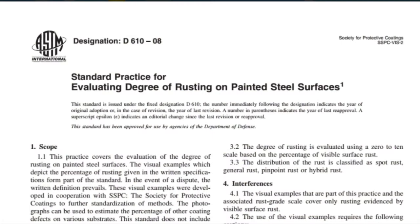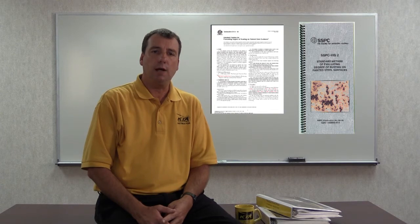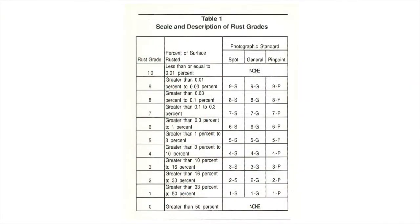ASTM D610 addresses the evaluation of the degree of rusting on painted steel surfaces. Visual examples and descriptions of rust grade were developed in cooperation with SSPC, the Society for Protective Coatings, and published as a VIS2 guide. Painted steel surfaces are assigned a rust grade on a scale of 10 to 0, where a rating of 10 indicates a rusted surface area of 0.01% or less, and a rating of 0 indicates a rusted surface area greater than 50%.